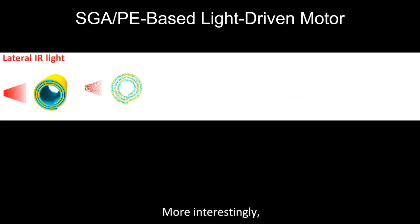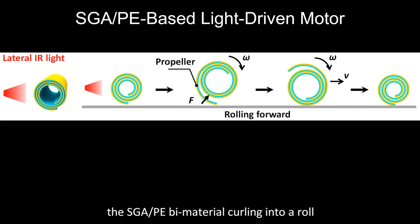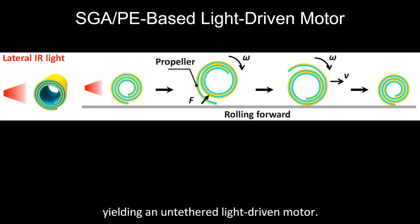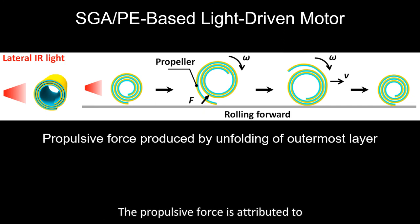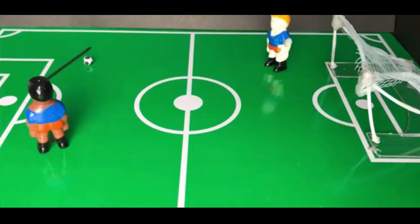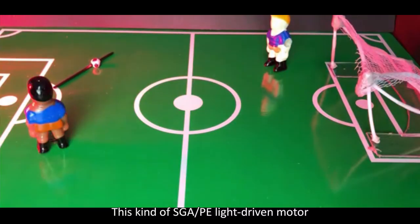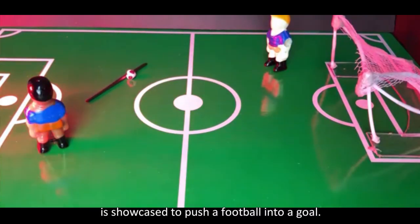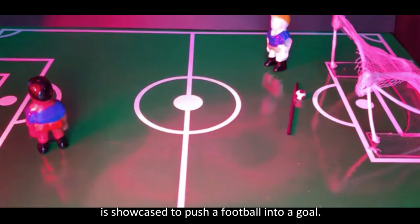More interestingly, the SGA-PE bilayer curling into a roll can achieve rolling locomotion under lateral infrared lighting, yielding an untethered, light-driven motor. The propulsive force is attributed to the unfolding of the outer motion layer under heating and then interaction with the ground. This SGA-PE light-driven motor is showcased pushing a football into a goal.